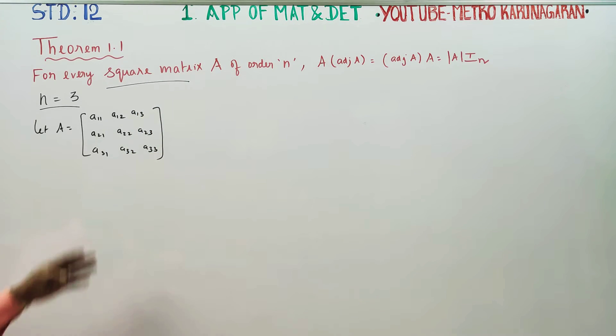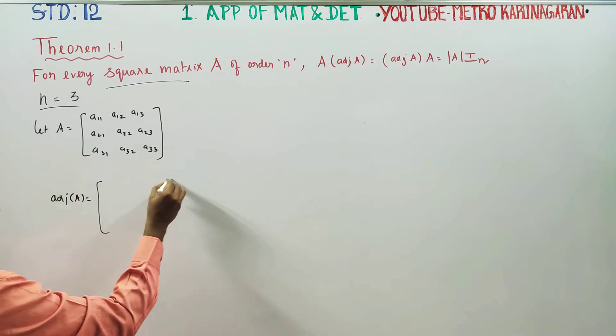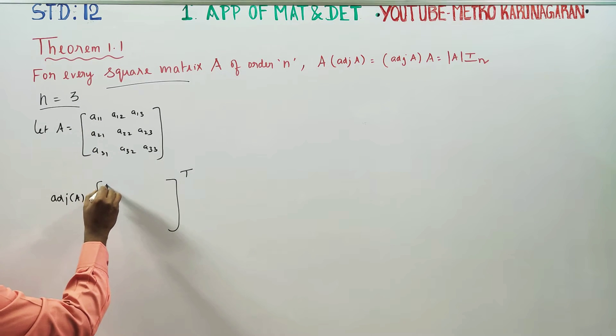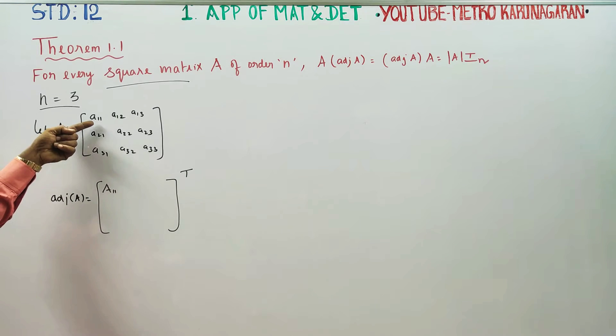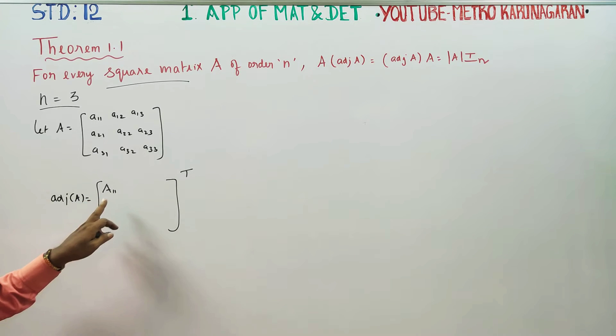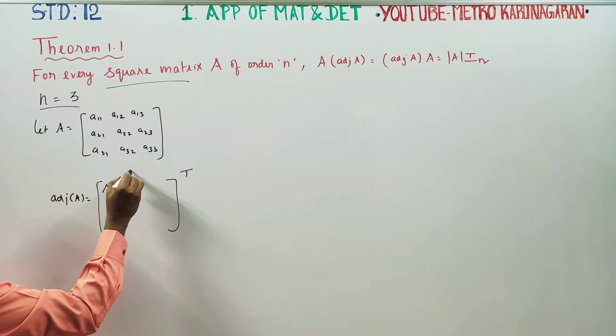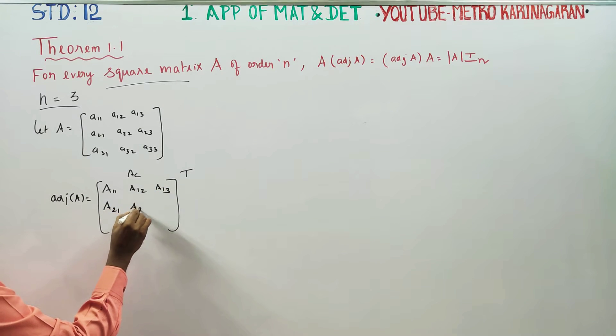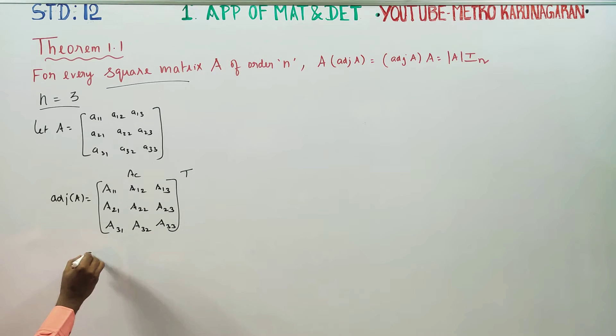Now we have chosen a matrix. What we need to do is find the adjoint. I am going to find the adjoint matrix. Adjoint formula: cofactor matrix transpose. A11 is the element, capital A11 is the cofactor.